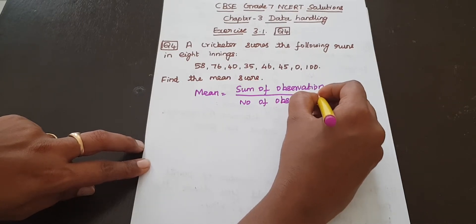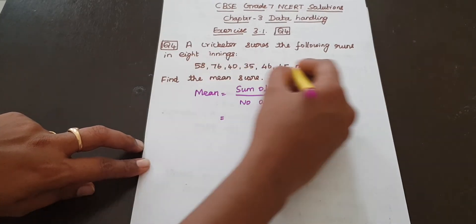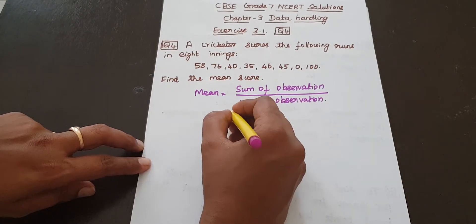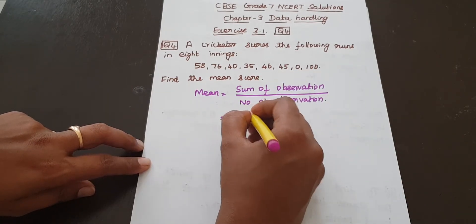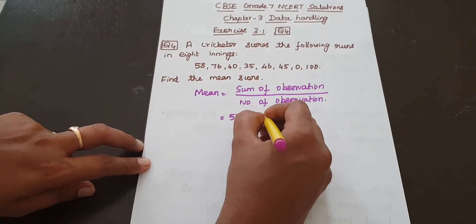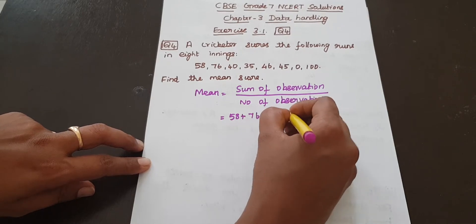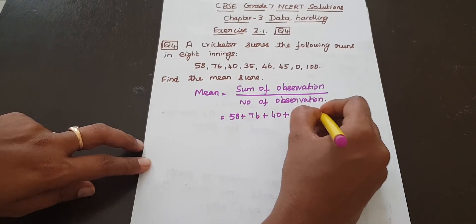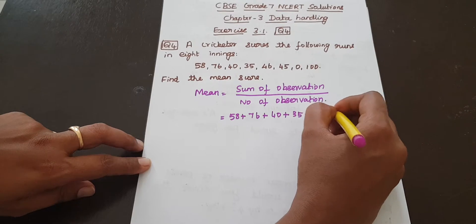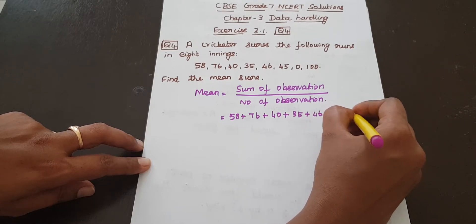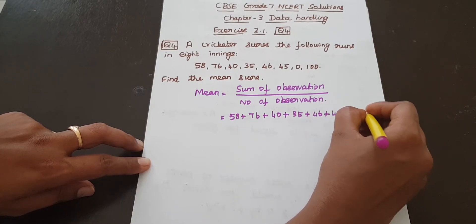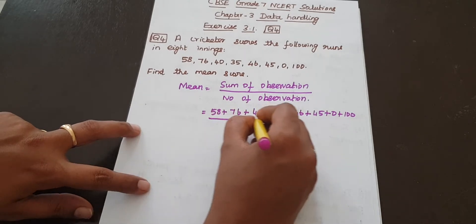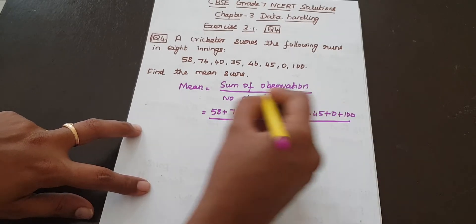So, sum of observations — add all of them: 58 plus 76 plus 40 plus 35 plus 46 plus 45 plus 0 plus 100. Divided by number of observations.